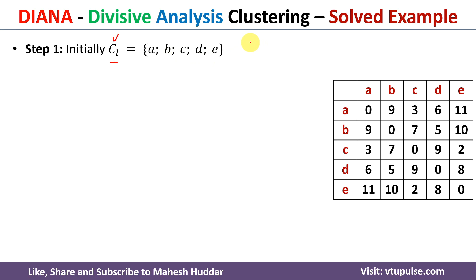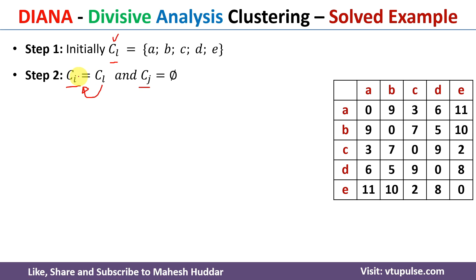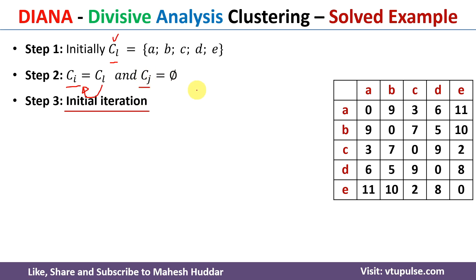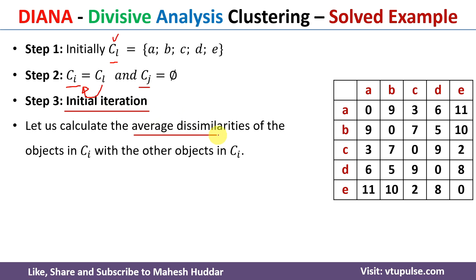We want to divide this dataset into two clusters — the first cluster named Ci and the second named Cj. All data points from CL are initially assigned to Ci, and nothing is in Cj. We then select one data point from Ci and move it to Cj, repeating this process until we get the final clusters. In the initial iteration (when Cj is empty), we calculate the average dissimilarity of each object in Ci with all other objects in Ci.